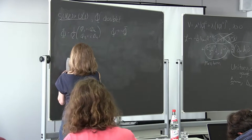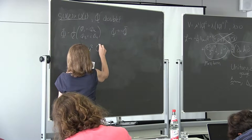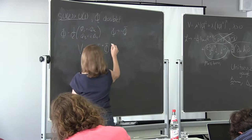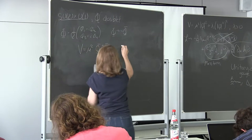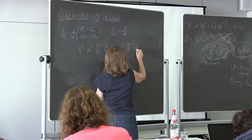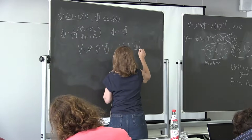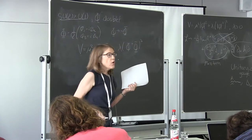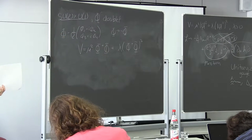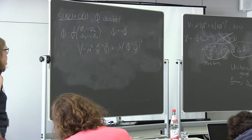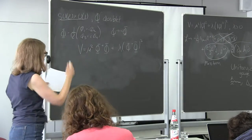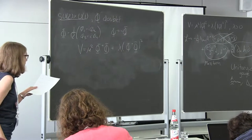We write down the most general renormalizable potential, invariant under φ → −φ: V = μ² φ†φ + λ (φ†φ)². There is no term linear in φ and no cubic term because you can't write SU(2) invariants, and they would spoil the φ → −φ symmetry.